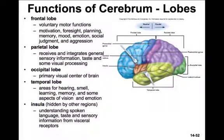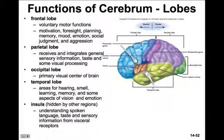The frontal lobe, shown here in light blue, is all about voluntary motor functions. It's involved in motivation, foresight, planning, memory, mood, emotion, social judgment, and aggression. The prefrontal region is particularly interesting because of its involvement in emotion and social judgment — damage to this region of the brain causes people to make bad decisions.